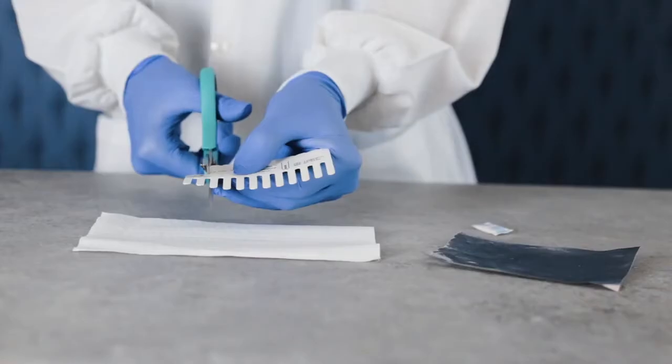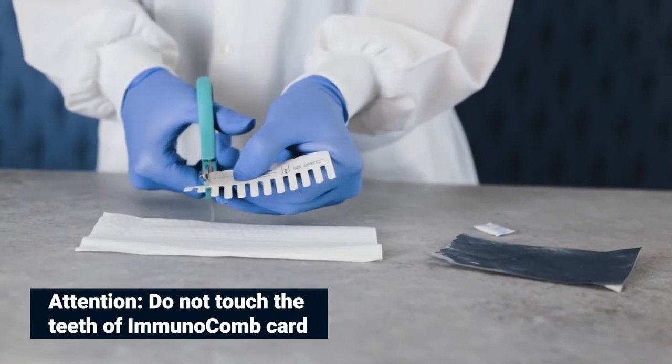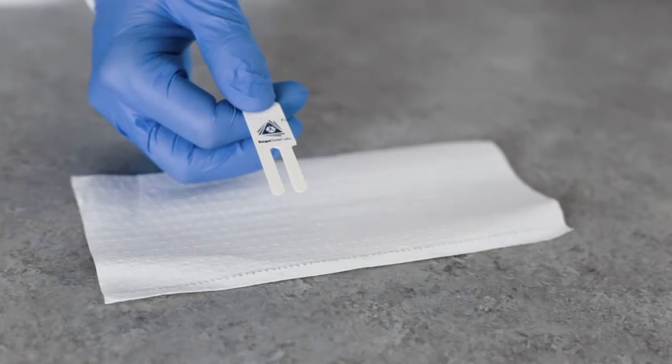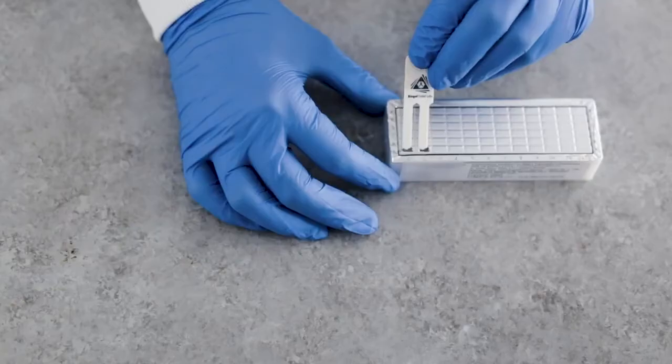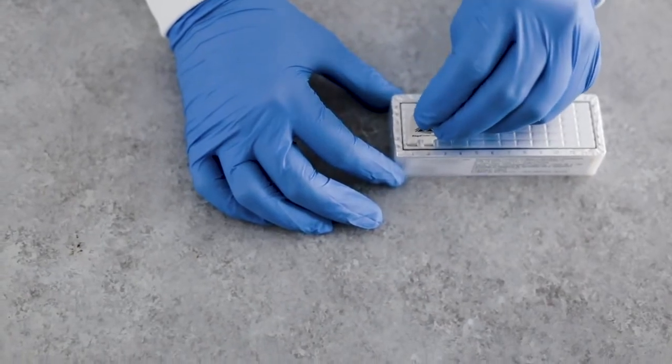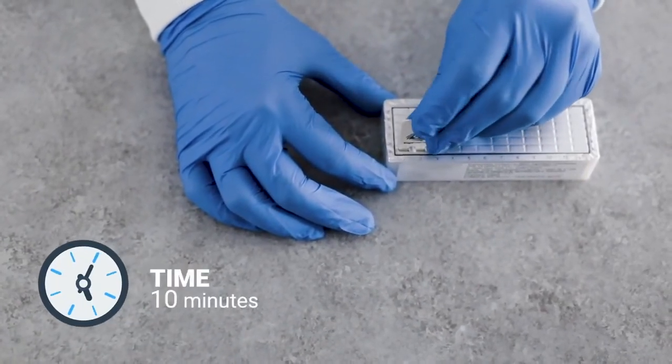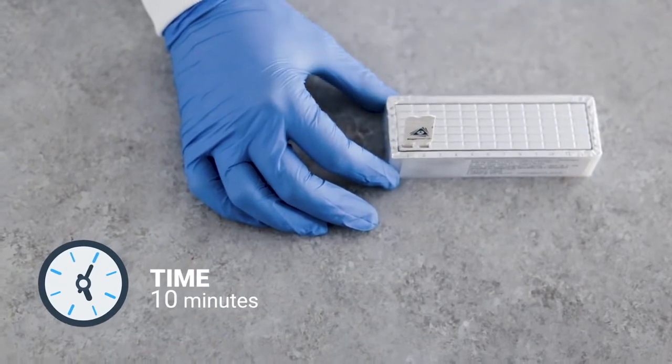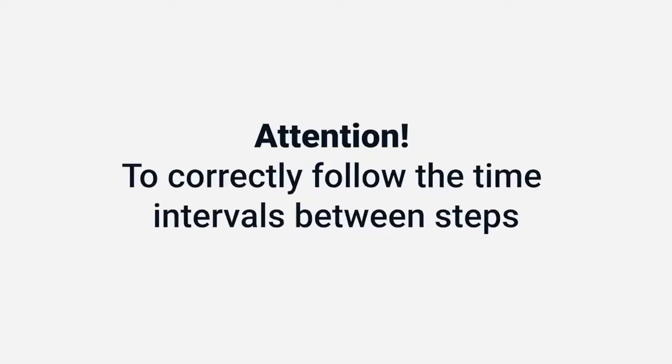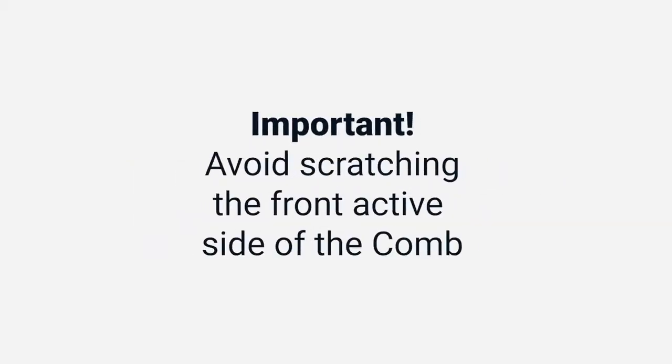Remove the comb from its protective envelope. Remember that we will be using two comb teeth to perform the test. Insert the comb into the open wells in row A, printed side facing you, and incubate for 10 minutes. Attention! It is essential to follow the correct time intervals between each step to achieve accurate results. Avoid scratching the front active side of the comb by leaning it to the back while mixing.